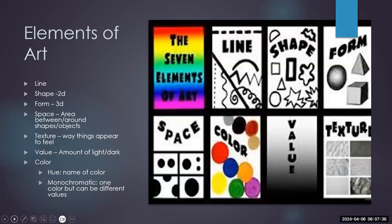Let's get into the elements of art. I included visuals because they make it easier to remember and understand each one. Line refers to a path created by a moving point. Whenever we're talking about lines, it doesn't have to be straight — it can be curved, jagged, thick, or thin, or a combination of any of these characteristics. Artists use lines to define shapes, create texture, and imply movement or direction within an artwork.